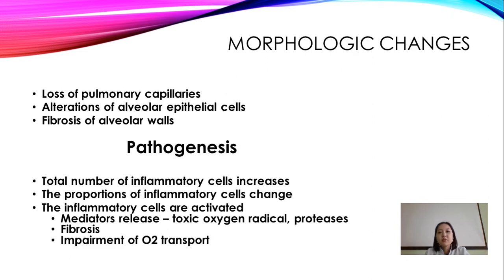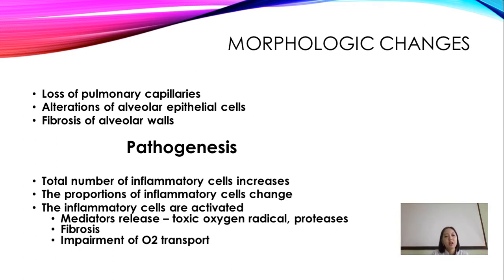The morphologic changes you will find include: loss of pulmonary capillaries, alteration of alveolar epithelial cells, and fibrosis of alveolar walls.